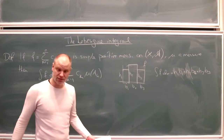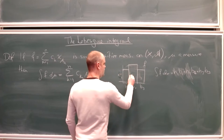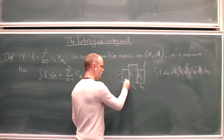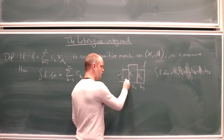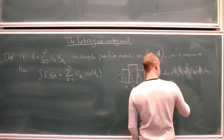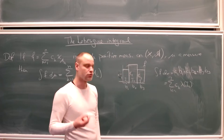Instead of calling them heights, I call them c1, c2, and c3. And instead of writing d1 — the length of the base — I call this interval 1, interval 2, interval 3. So my formula becomes the sum of c_k times the length of I_k, where lambda(I_k) denotes the length of I_k.